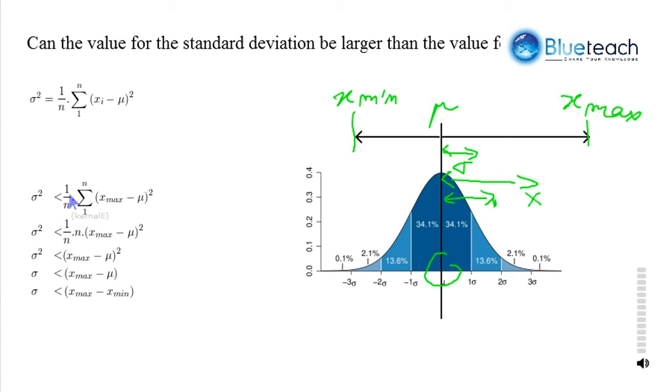So, sigma squared is lower than this value. And then, it's just basic math, because the sum of 1 to n of every similar term, x max minus mu, is just n times x max minus mu squared. So, sigma squared is lower than x max minus mu squared.